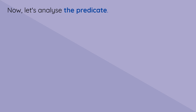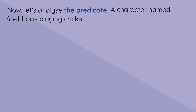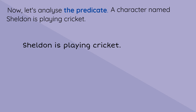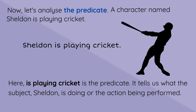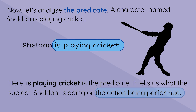Now let's analyse the predicate. A character named Sheldon is playing cricket. In the sentence 'Sheldon is playing cricket,' the phrase 'is playing cricket' is the predicate. It tells us what the subject Sheldon is doing, or the action being performed.